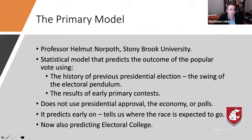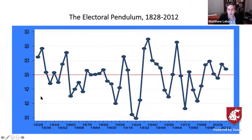The primary model is a statistical model that predicts the outcome of the popular vote using only two factors. It doesn't use presidential popularity or the economy. It uses what we call the swing of the electoral pendulum — the idea that control of the White House swings from Democrats to Republicans and back with some regularity that can be quantified statistically — and the results of early primary contests. In 2020 for the first time it's also predicting the Electoral College.